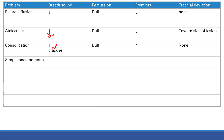Simple pneumothorax: your lung is collapsed, so no breath sounds. Percussion: the problem is all that air in the pleural space, so you're hyper-resonant. Fremitus: air decreases lung density, so you have decreased fremitus. Is there tracheal deviation? No — tracheal deviation only happens in tension pneumothorax, where air can't leave the pleural space and pressure just keeps building.